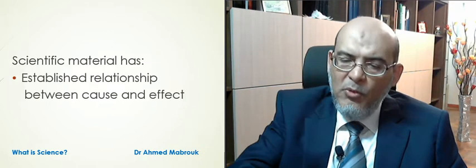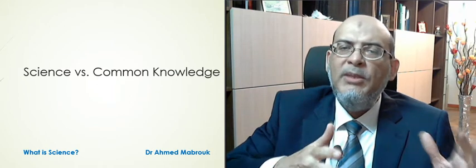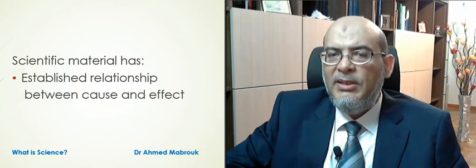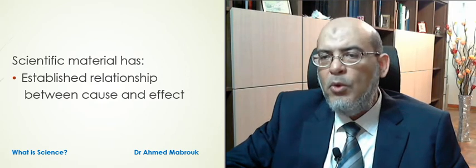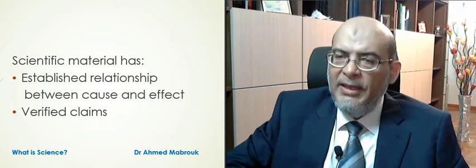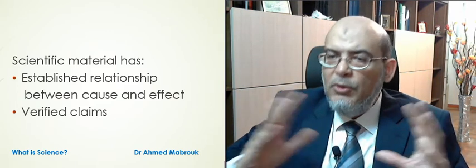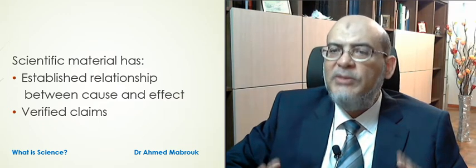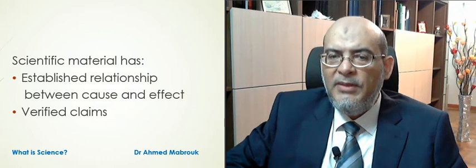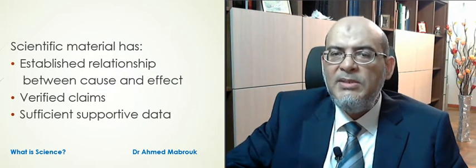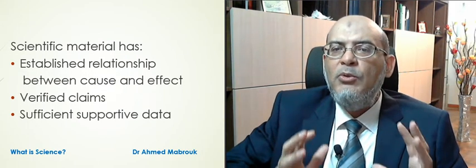Now, if we move this exact example to a medical doctor, we'd see a different picture. Number one, because he is a medical doctor and because he studied biochemistry and physiology, he would know how some types of food would affect the cold. So that's what you would get in a scientific material — an established relationship between the cause and the effect. And number two, because he is a doctor, he would have access to periodical journals that publish some data, and they would really do a study over enough number of people to verify that claim.